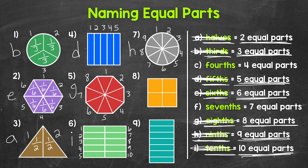For number 8, we have a square — that's our whole — and this square has been divided into 1, 2, 3, 4 equal parts. Four equal parts we call fourths. So let's put a C next to number 8 and cross off fourths. Each one of those equal parts is 1 fourth of the whole.